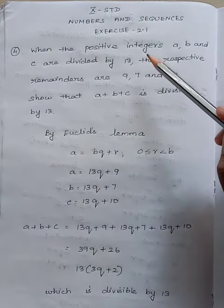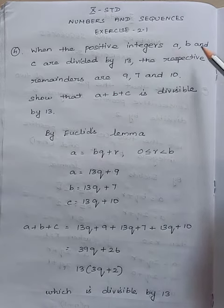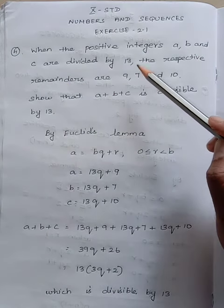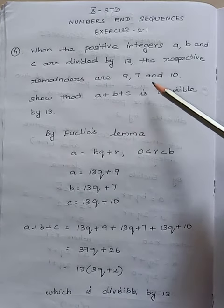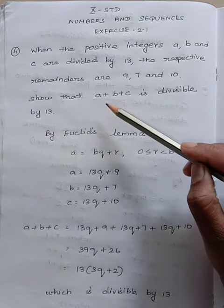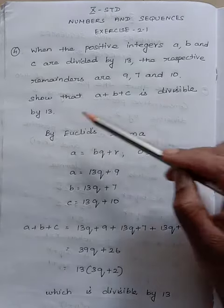When the positive integers a, b and c are divided by 13, the respective remainders are 9, 7 and 10. Show that a plus b plus c is divisible by 13.